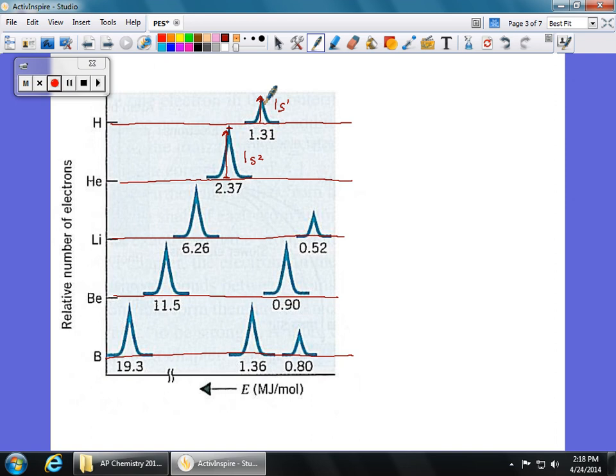If we look at lithium now, lithium has two different things. Lithium, which is going to be this one right here, has 1s2, just like helium does. But it also has a secondary peak. And this is going to be from the 2s, and it's 2s1. It's a different energy, obviously. And it's smaller because there's only one electron in it, because the electron configuration is 1s2, 2s1.